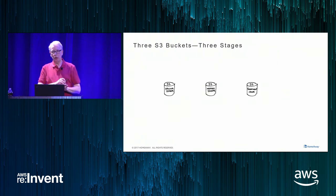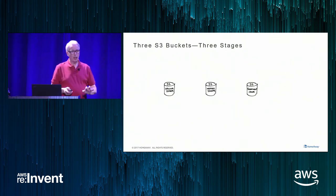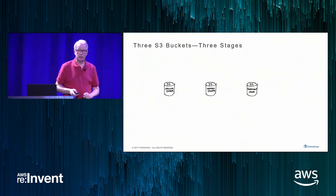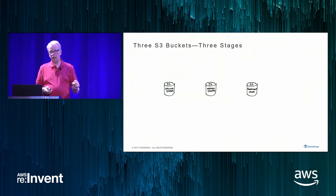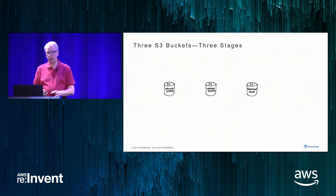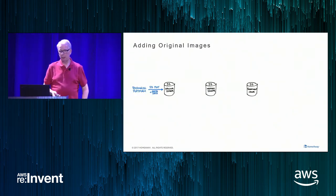Now I'm going to go through step-by-step and build up the architecture of Otis. At its core, there are three S3 buckets: one on the far left for the original images, one in the middle for the master images, and one on the right for the treatments we serve up to the public.